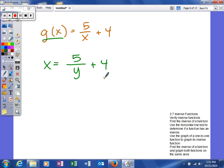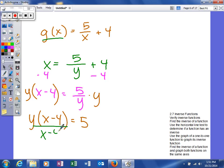So in solving for y, we could have multiple steps in this problem. But the first thing I would do is subtract 4, and I get x minus 4 is equal to 5 over y. To get y by itself, I don't like the fact that it's in the denominator. So I'm going to multiply both sides of my equation by y. So I get y times x minus 4 is equal to 5. And then my last step to get y by itself is I can divide by x minus 4. So our inverse function in this problem will be 5 over x minus 4.